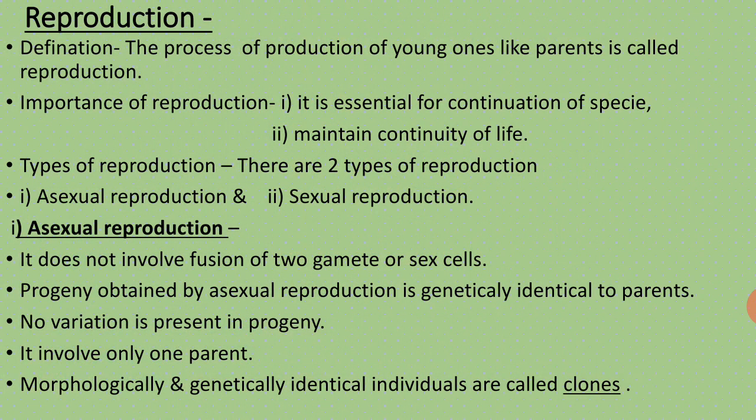First of all, we will start with the definition of reproduction. The process of production of young ones like parents is called reproduction. It is the process in which a parent produces younger ones that are similar to the parent. In other words, producing a new individual similar to oneself is reproduction — 're' means occurring repeatedly.